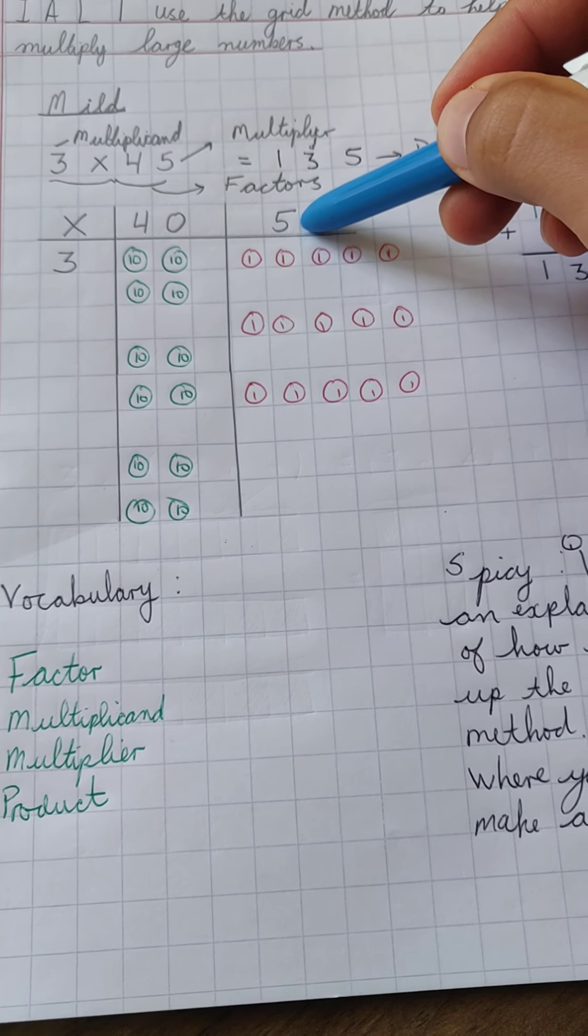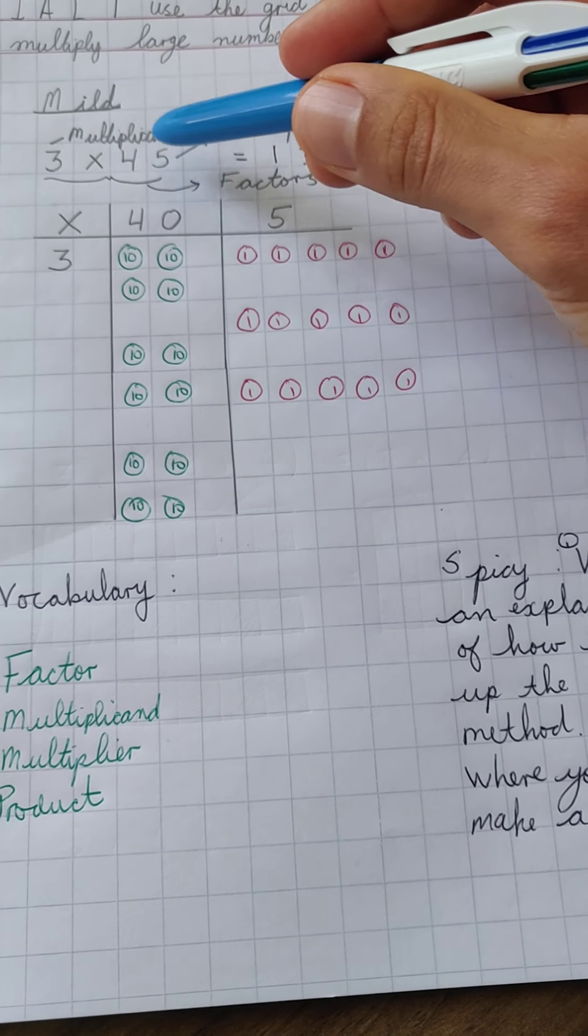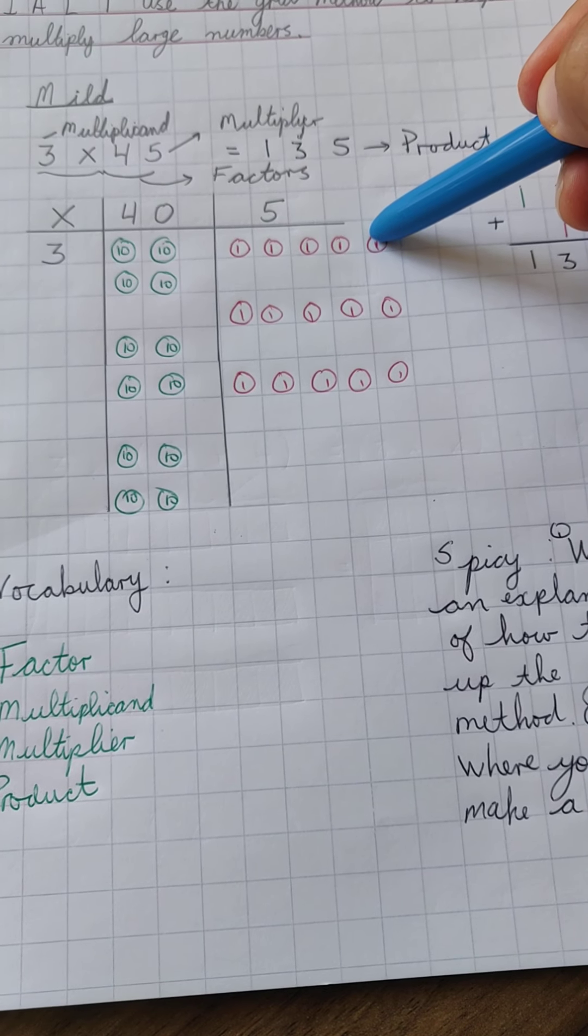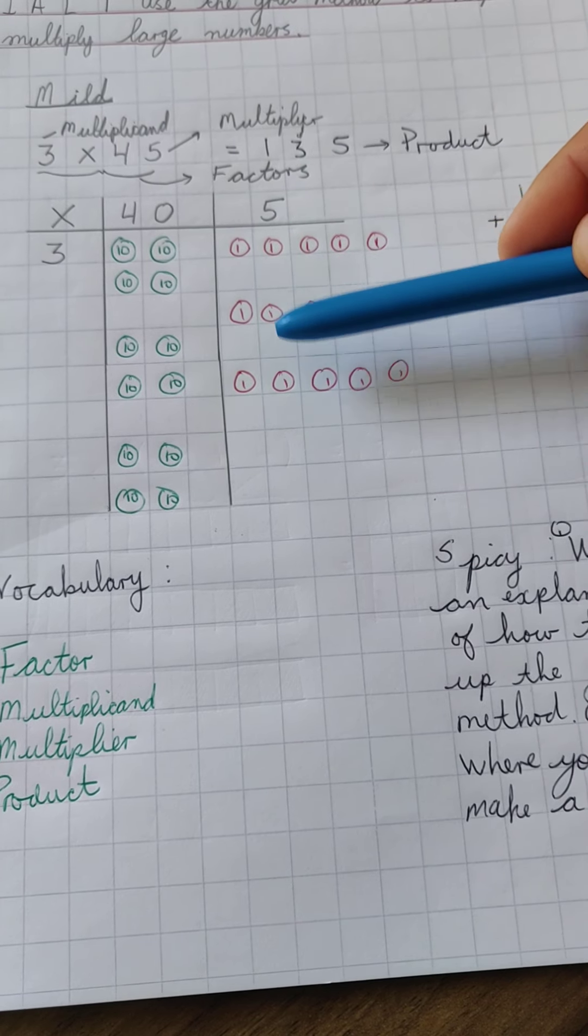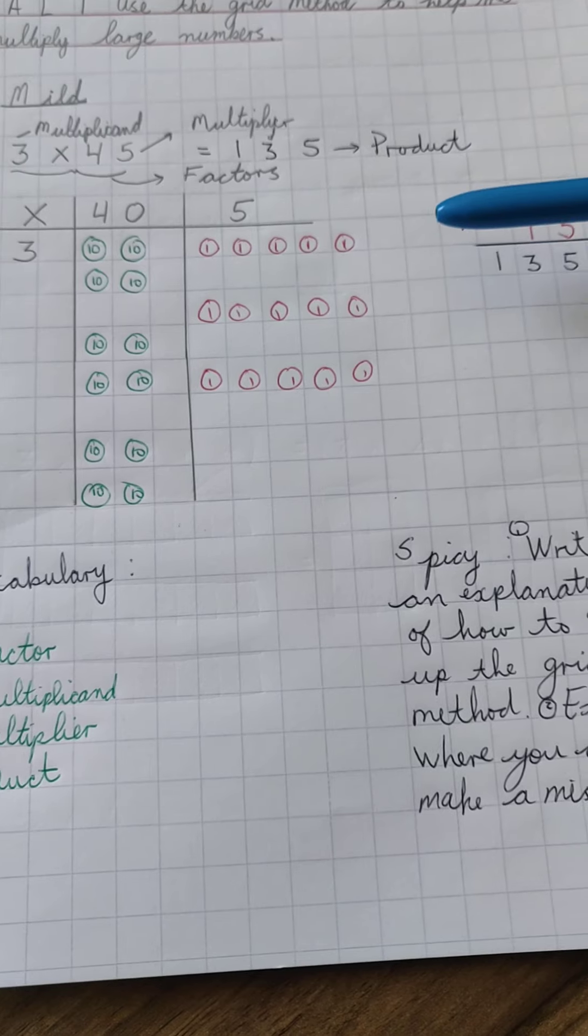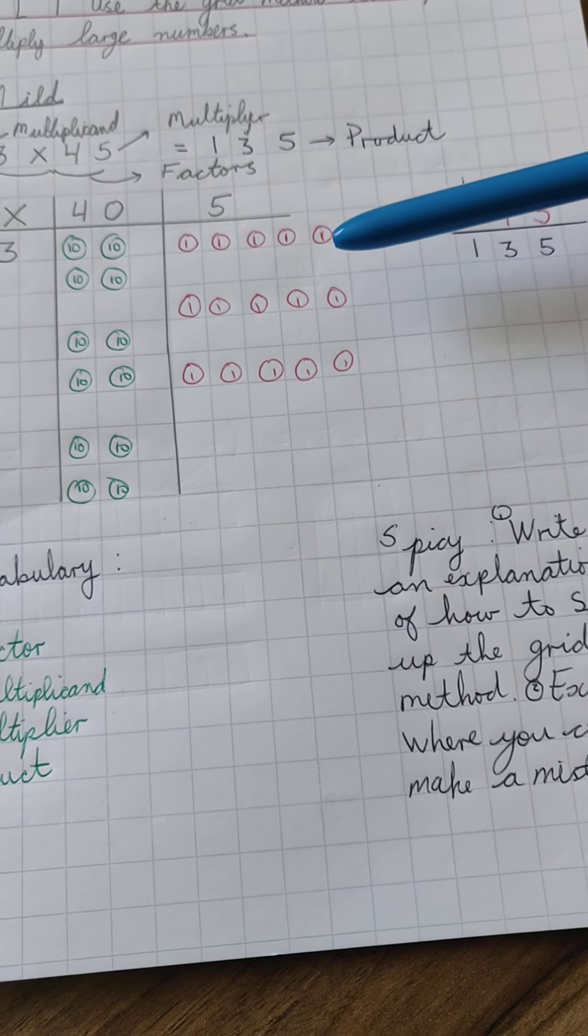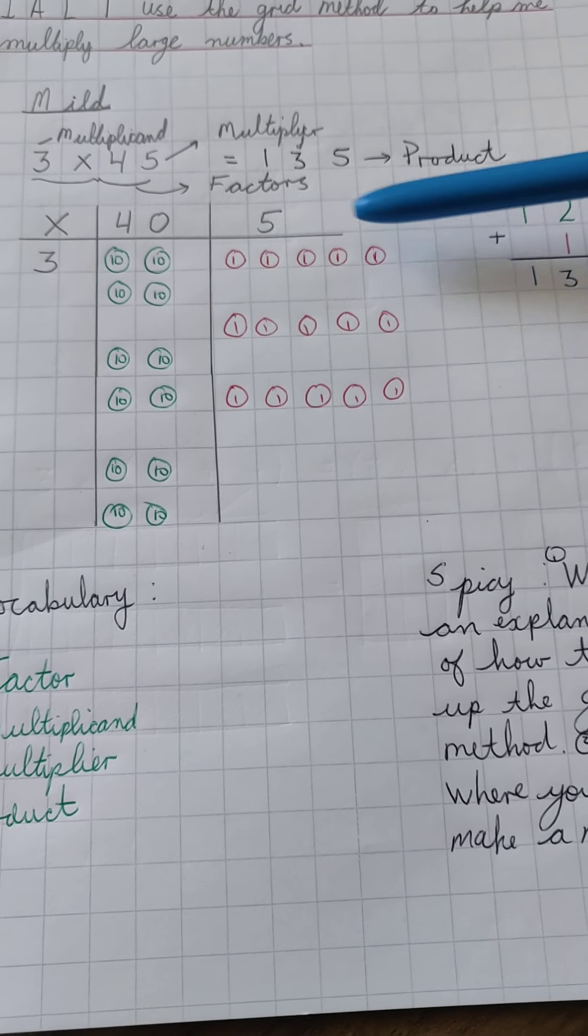Now, I do the same thing with my 5, which are representative of my ones. And again, originally, I only had 5, 1, 2, 3, 4 and 5, but I have 3 lots of those. So I have 1, 2 and 3. And again, for some of you, you will be able to see that that is 15 right away, 3 times 5. However, if you do need to use the counters to support, that is quite fine as well.